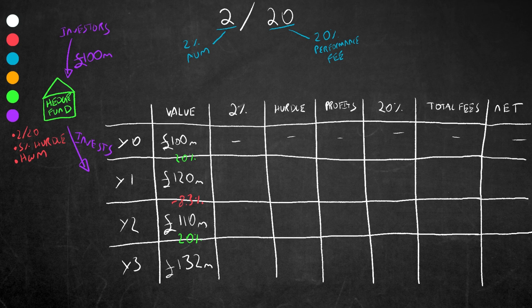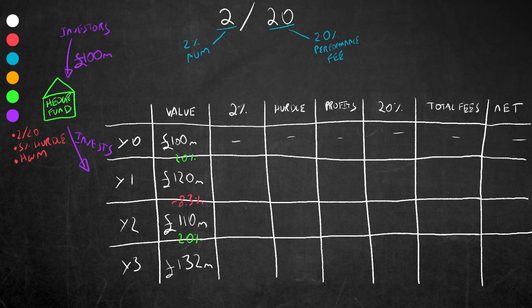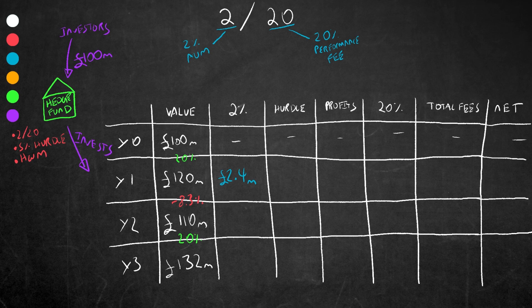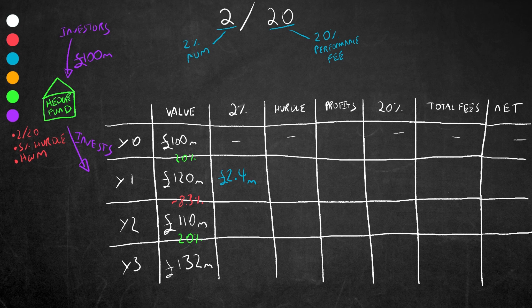Let's look at the first year. The 2 in the 2 and 20 arrangement refers to the 2 percent AUM or asset under management fees. At the end of year one, the investor would pay fees to the fund of about 2.4 million. This usually is deducted month on month, so technically it might be lower than this, but for now let's keep things simple.